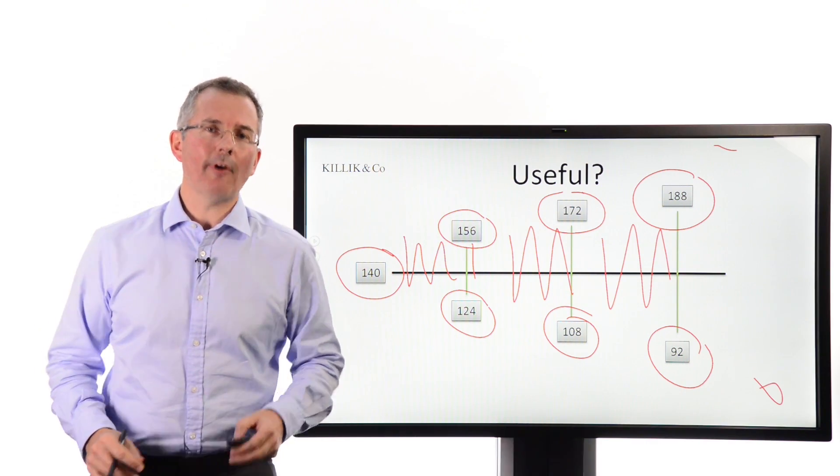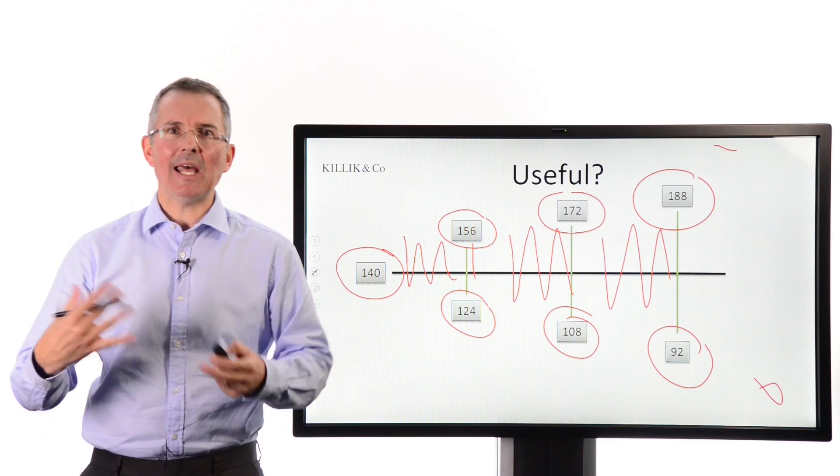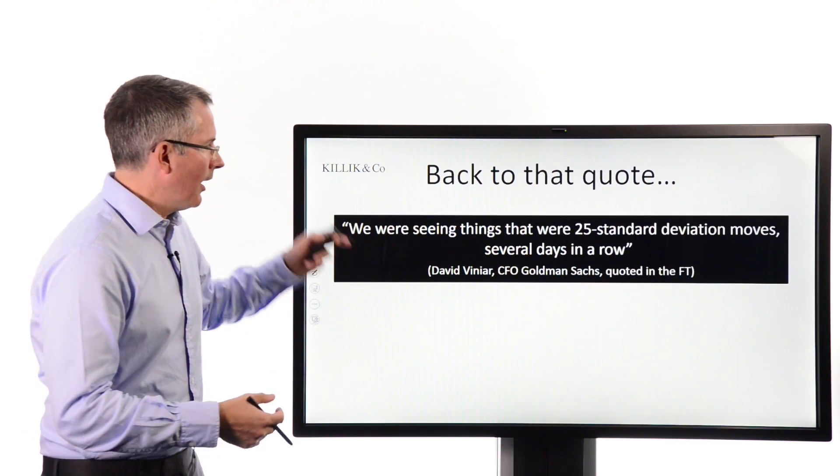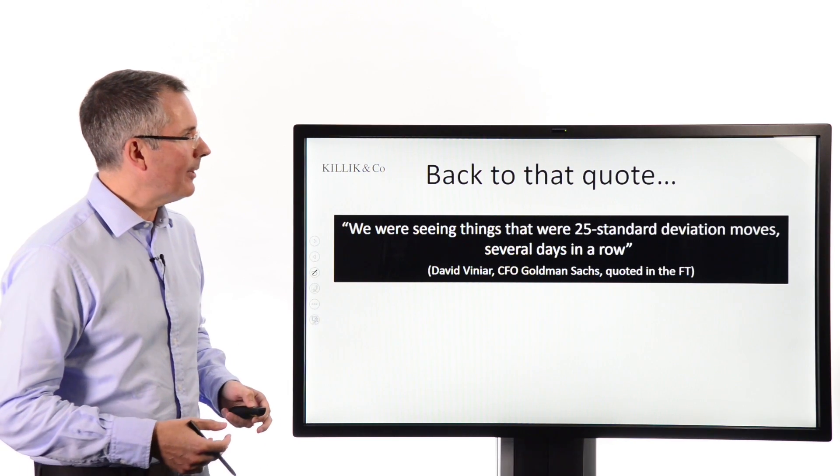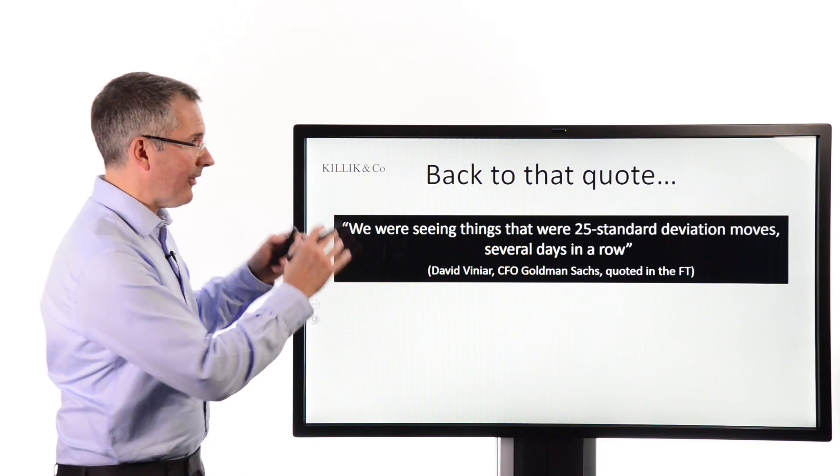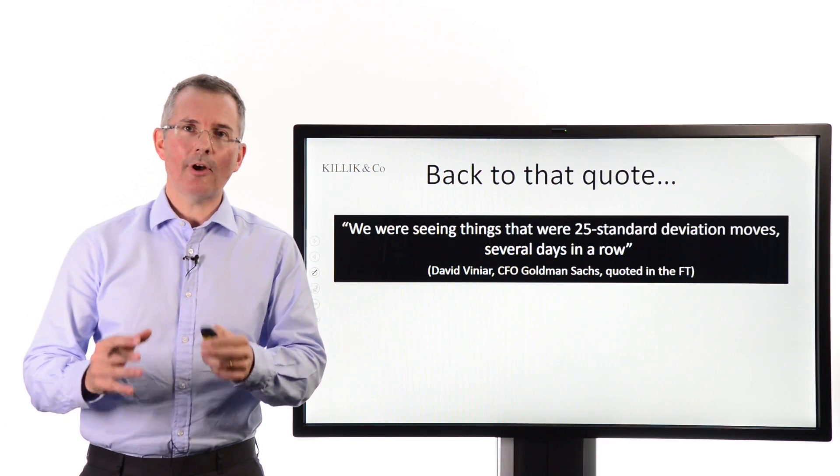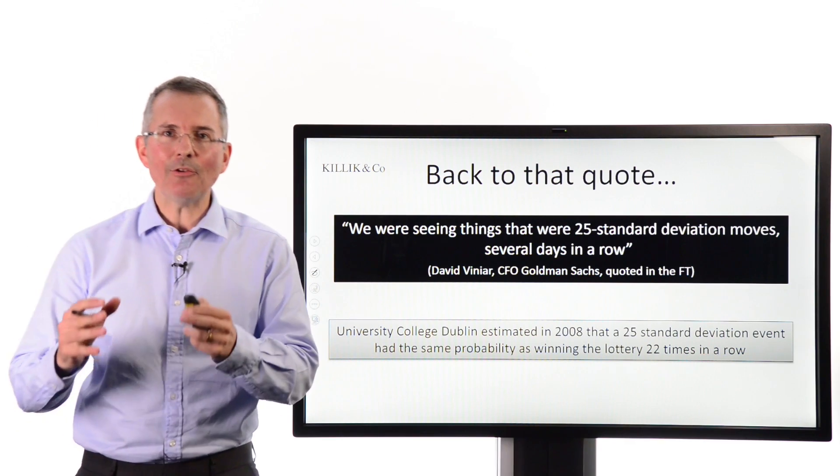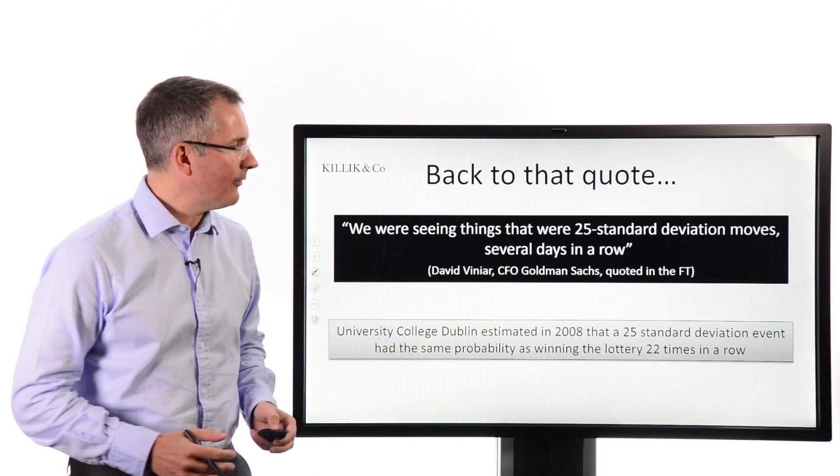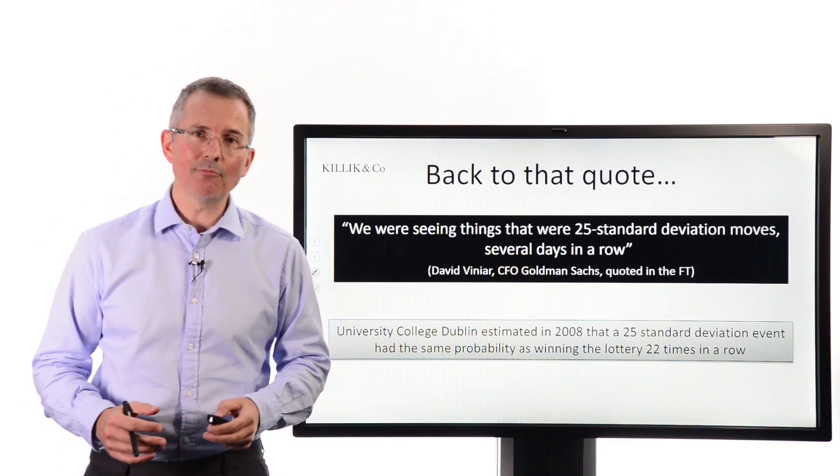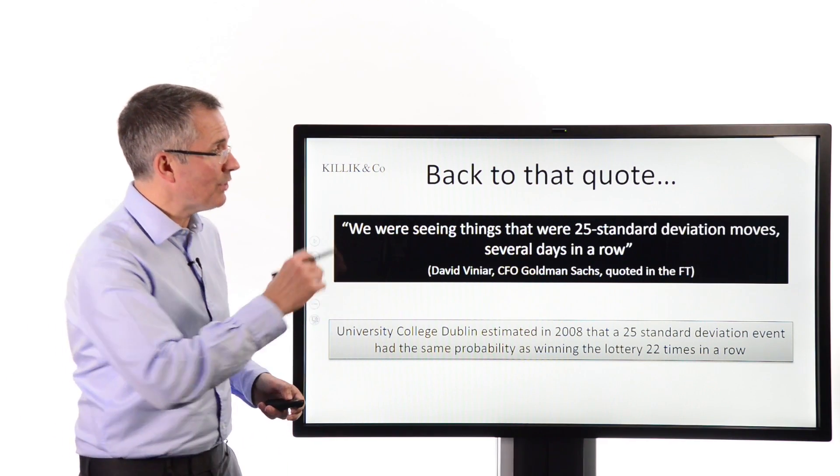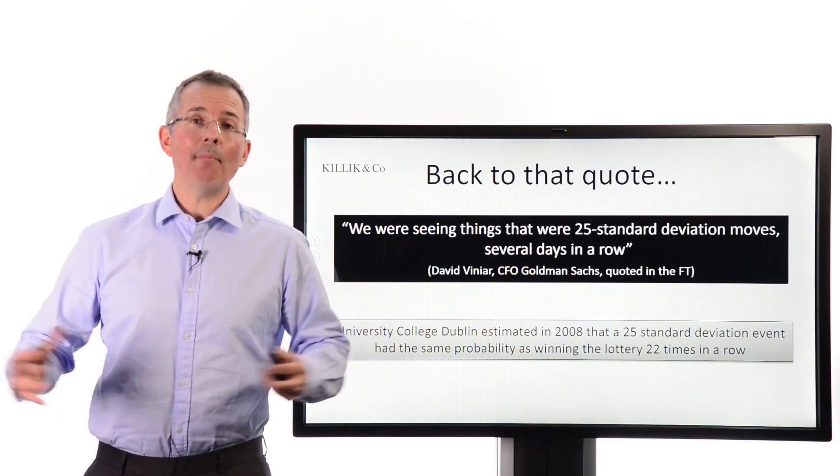Anyway, I'll leave you with that thought. And with this final slide, so let's go back to someone trying to explain the chaos around the credit crunch. Let's go back there and just finish with this quote. This was meant to be an explanation. We were seeing things that were 25 standard deviation moves several days in a row. No, I don't think we were. That's a headline grabber. It's an attempt to use science to explain something. But, frankly, it's not a very likely explanation. University College Dublin reckon that if you want to sort of benchmark that quote against something, a 25 standard deviation event has got roughly the same probability as winning the national lottery 21 or 22 times in a row. So, like other bits of financial jargon, standard deviation is useful but can be used and abused.